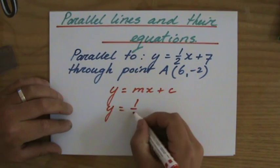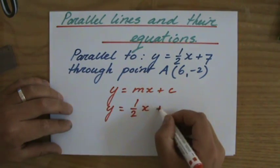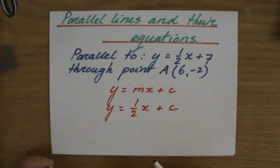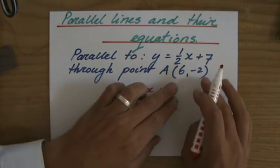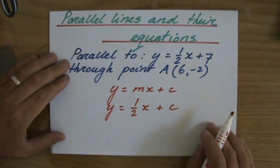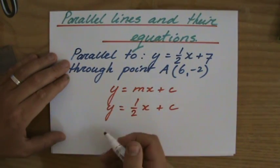Now all I need to do is find that y-intercept, and I do that by substituting that point into this equation. Well, y is minus 2 equals a half times x, a half times 6, plus c.